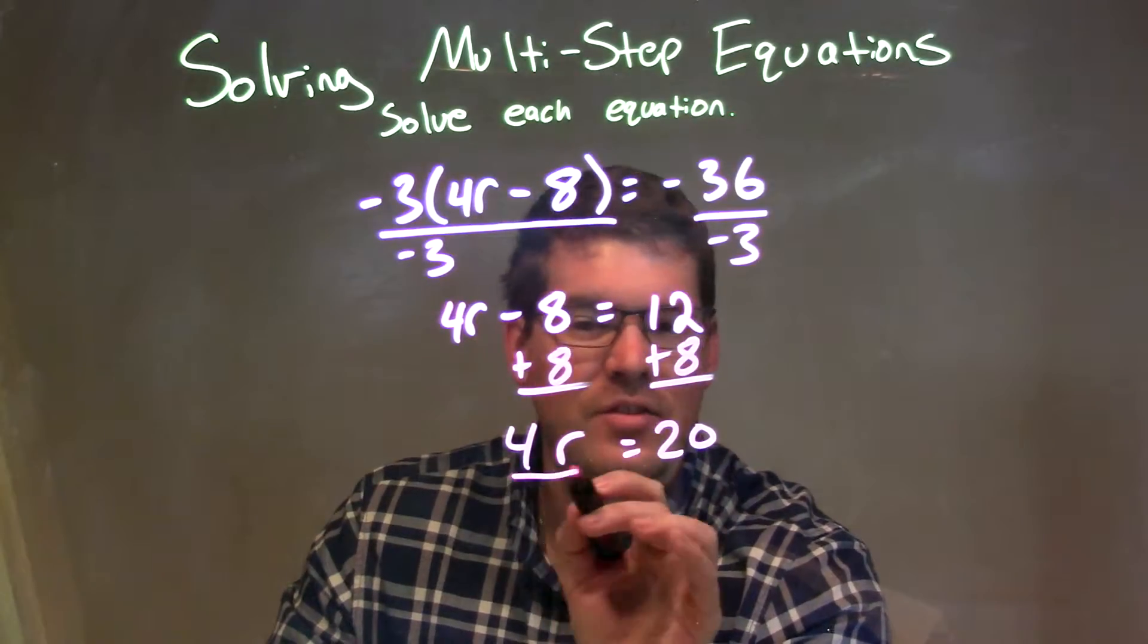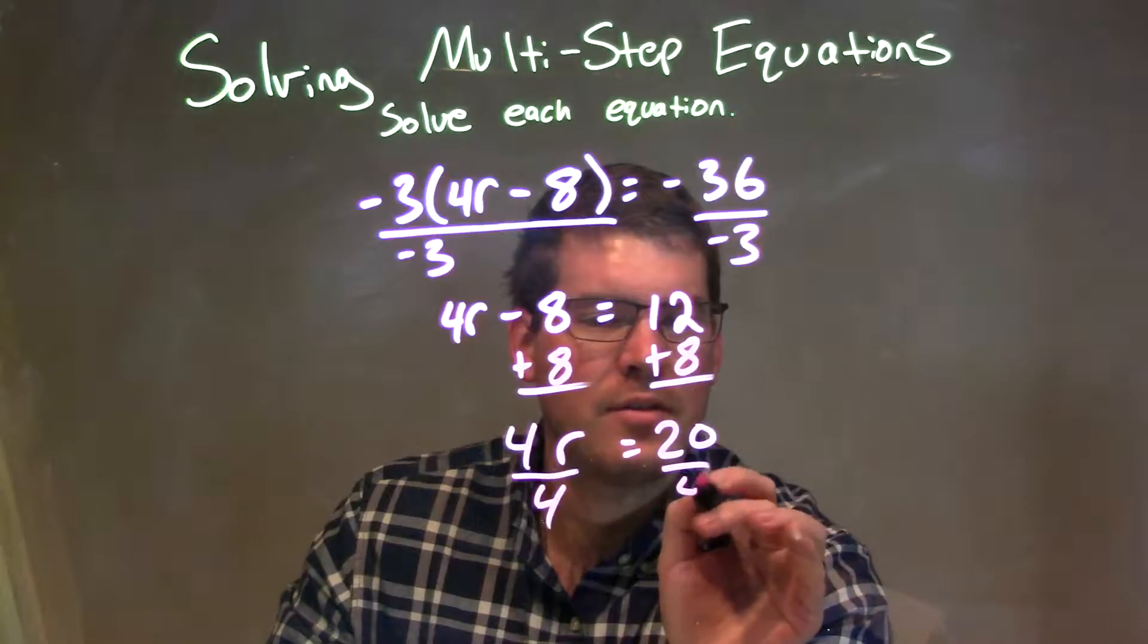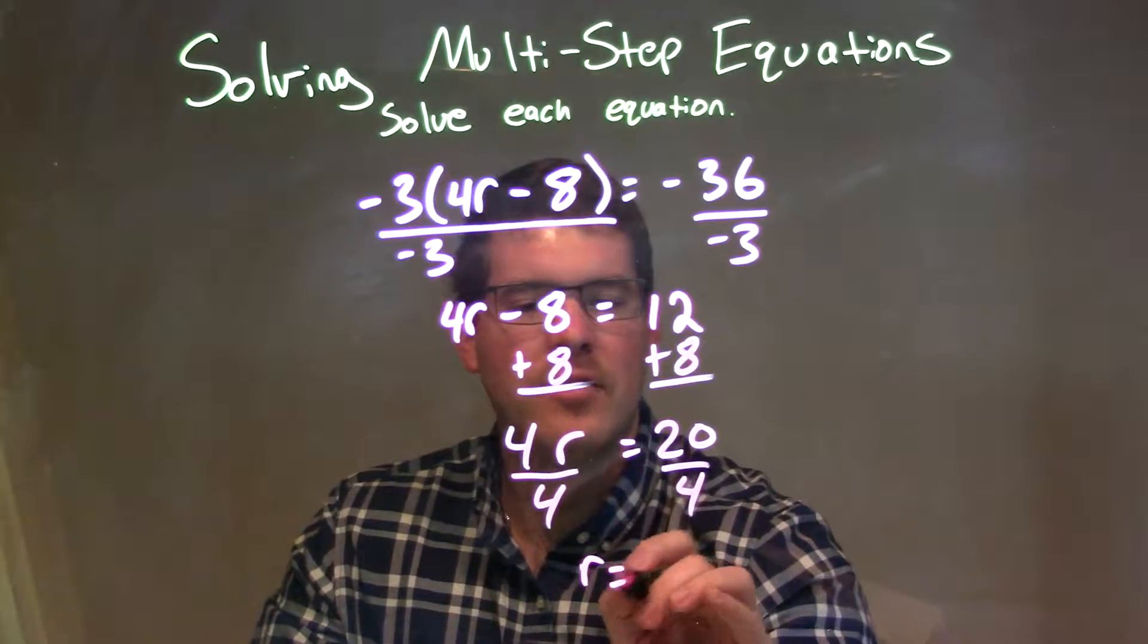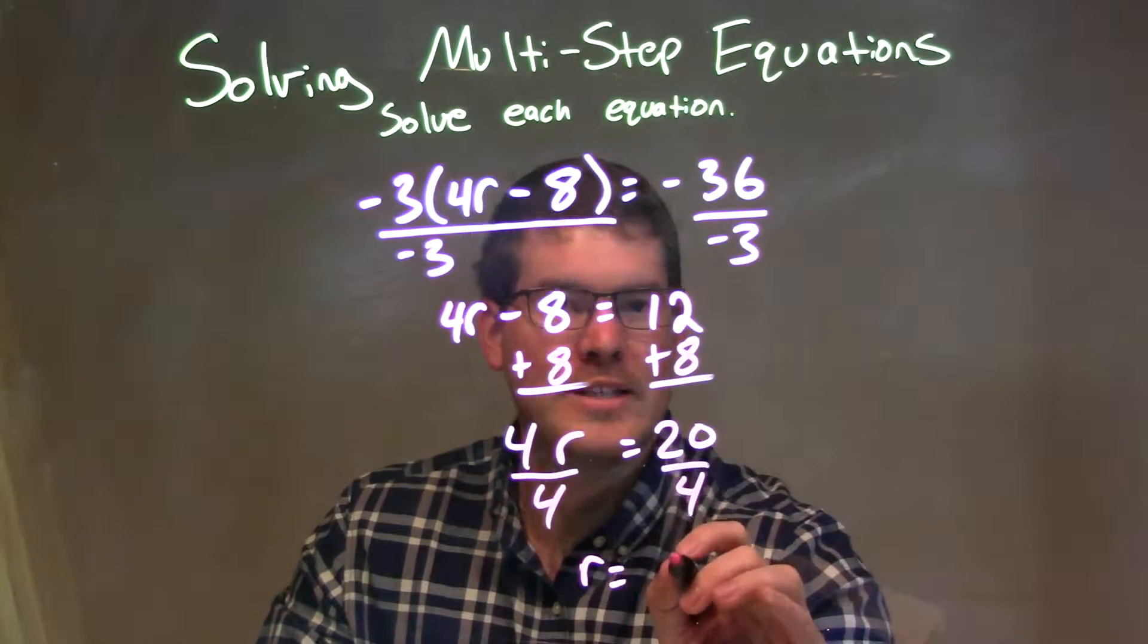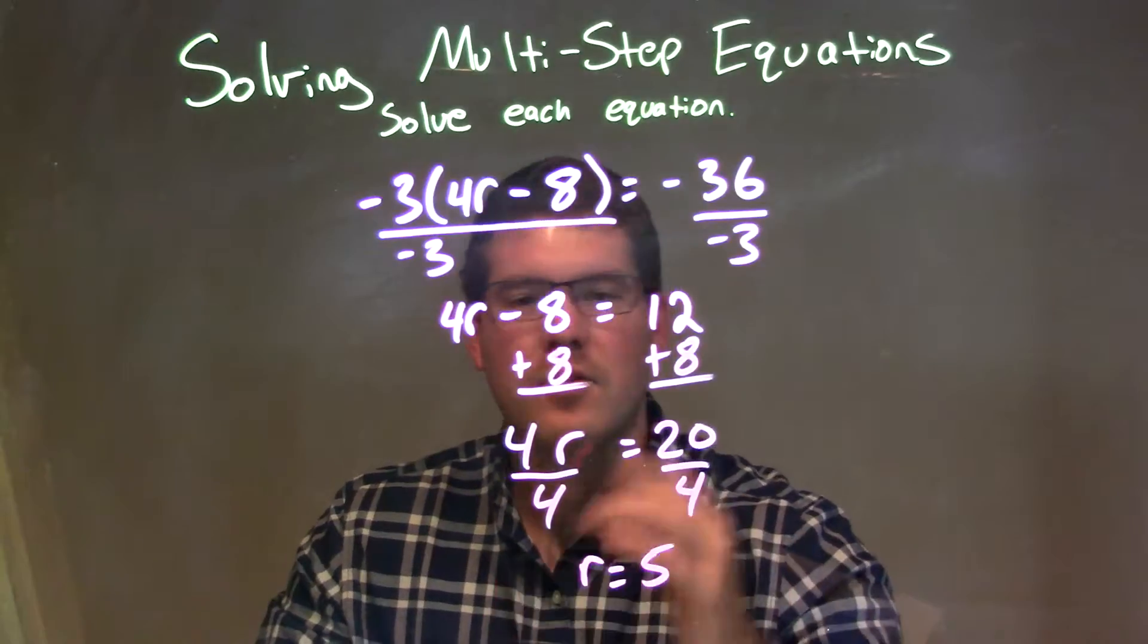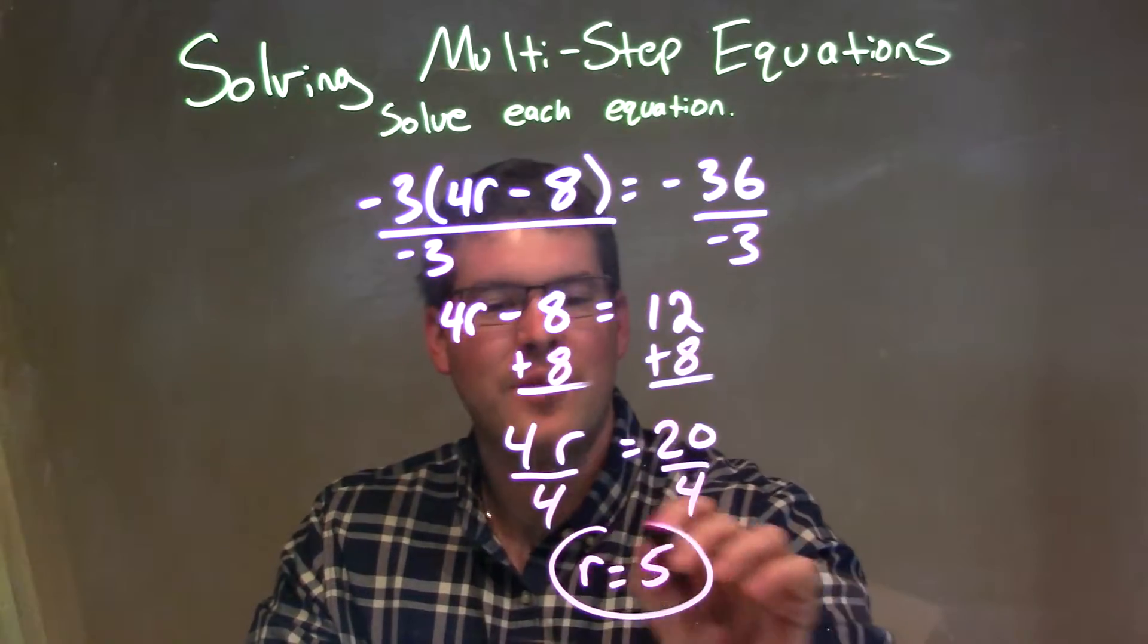Obviously, multiplication's opposite is division, so I'm going to divide by 4 on both sides. And that leaves me with r by itself here, equals 20 divided by 4, which is just 5. So our final answer here is just r equals 5.